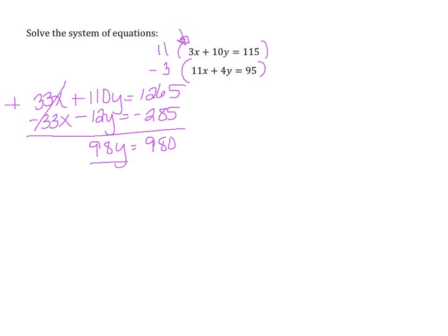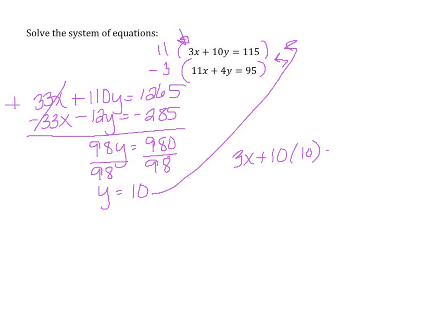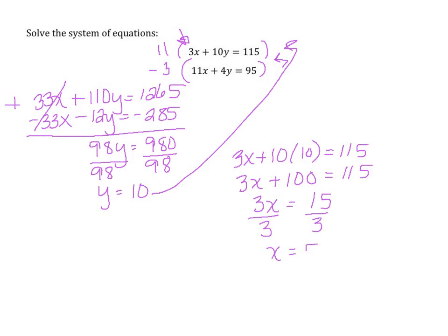To get y by itself, I'll divide by 98, and y equals 10. Now that I know what y is, I need to determine x. I'll plug y into the first equation: 3x plus 100 equals 115. Subtracting 100 gives 3x equals 15, and dividing by 3 gives x equals 5. We write the answer as an ordered pair: the solution is (5, 10). This is the location where the two lines cross on the graph.